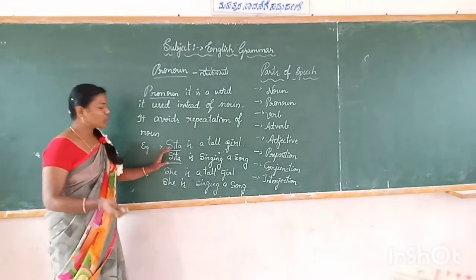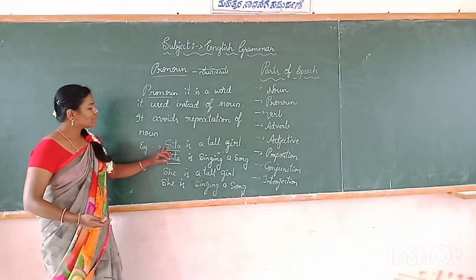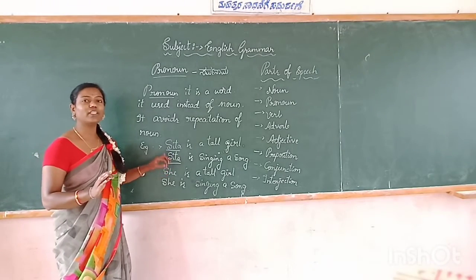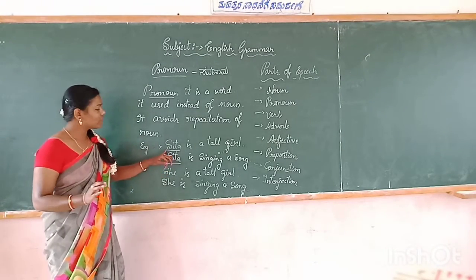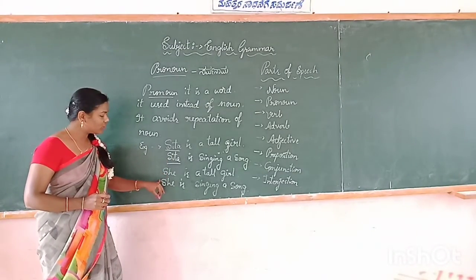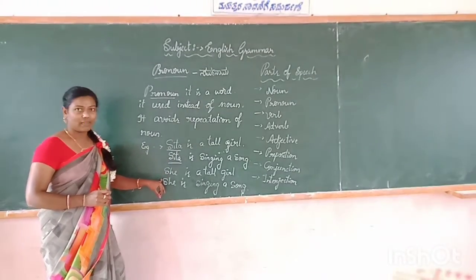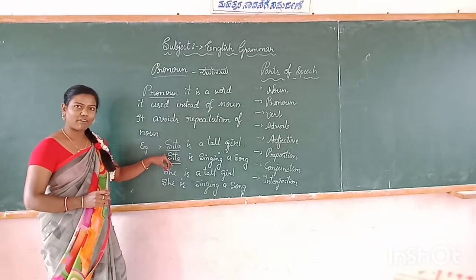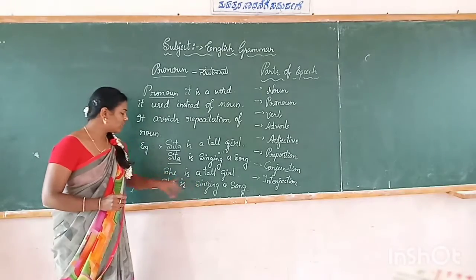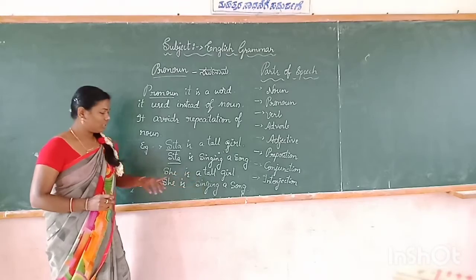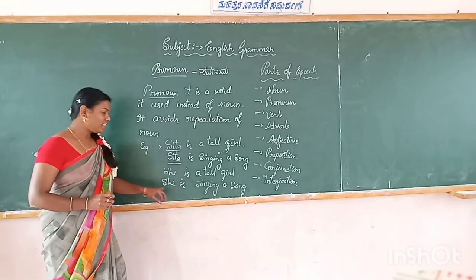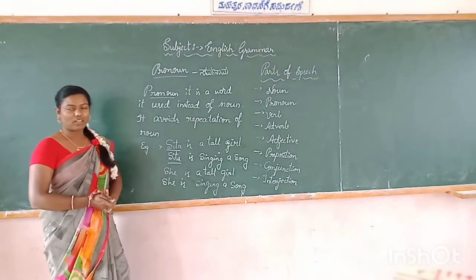We use the noun two times here. Sita is the noun. First, we identify the noun in a sentence. Sita is a noun. Instead of Sita, we use 'she', because Sita is a feminine gender. So: She is a singer. She is singing a song. Sita is a singer. And she is singing a song — like that.